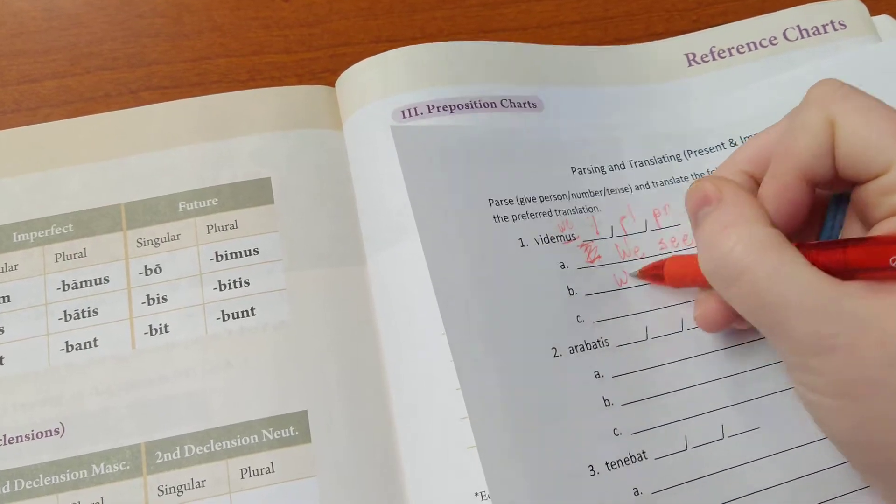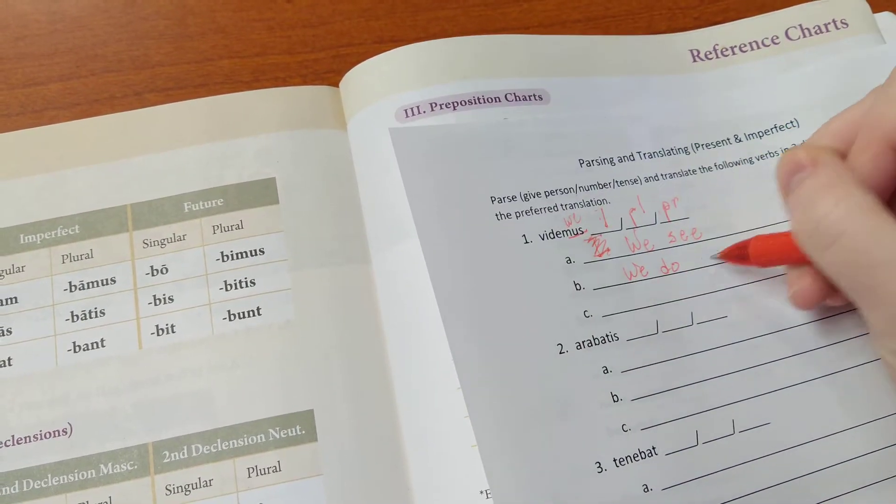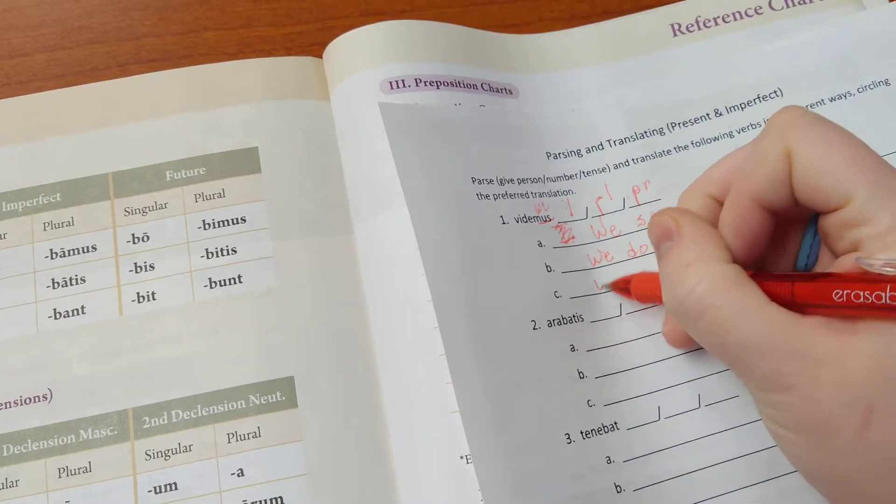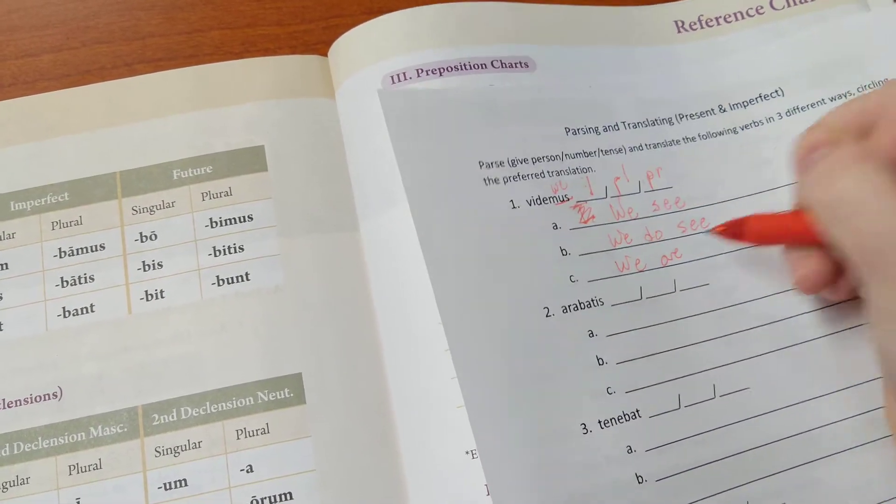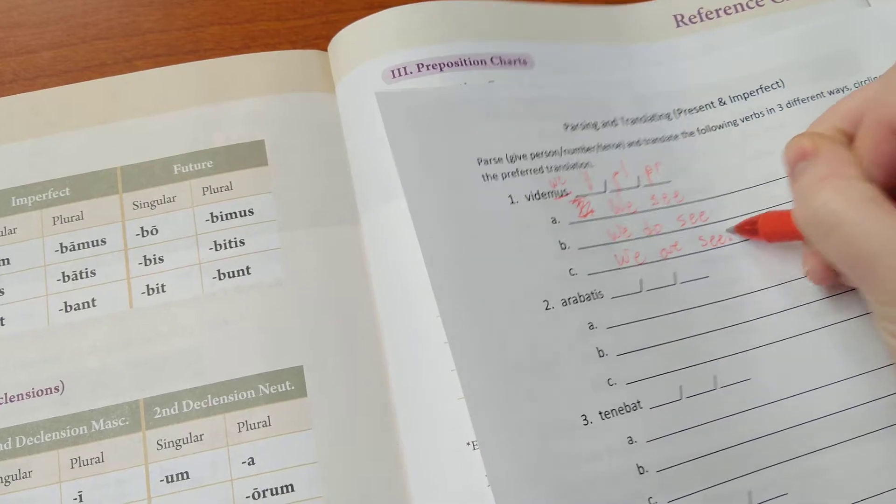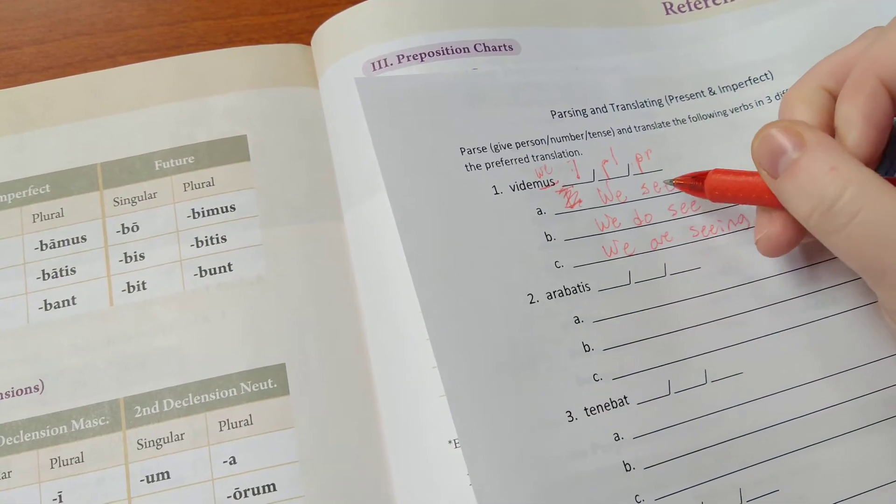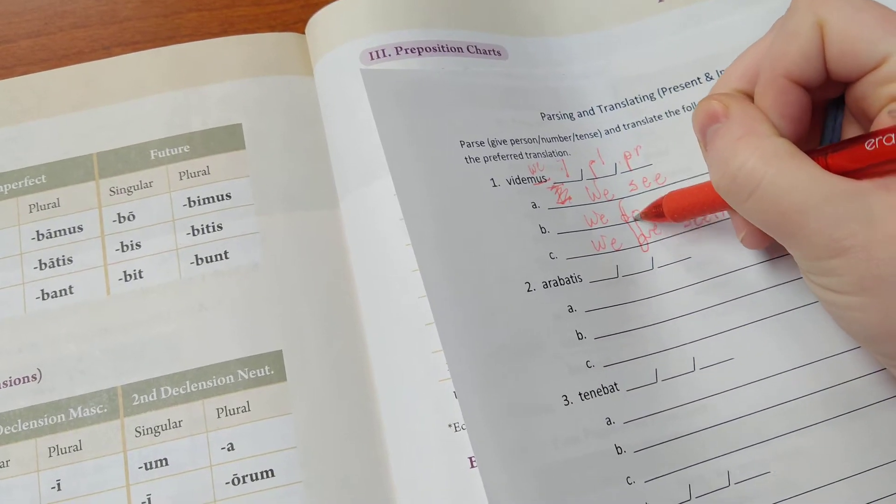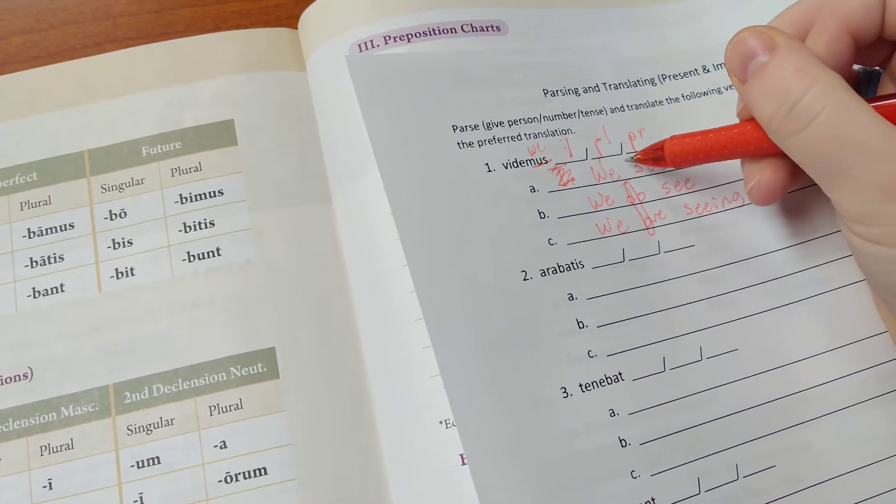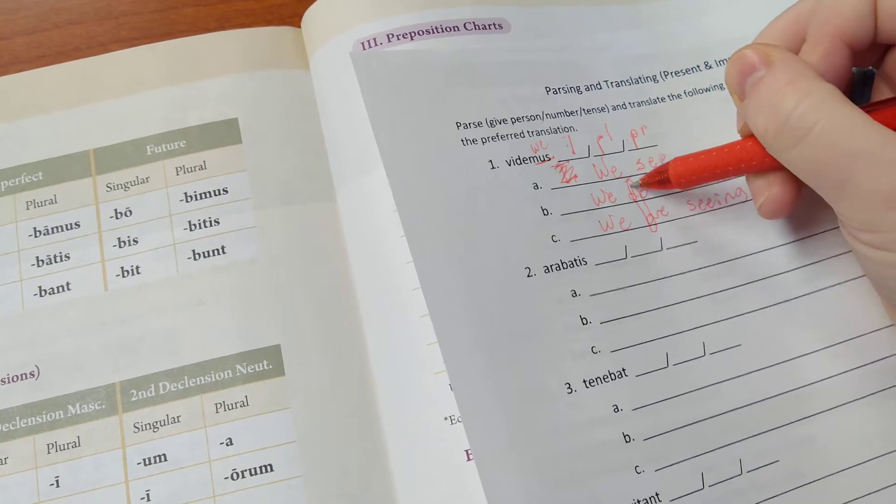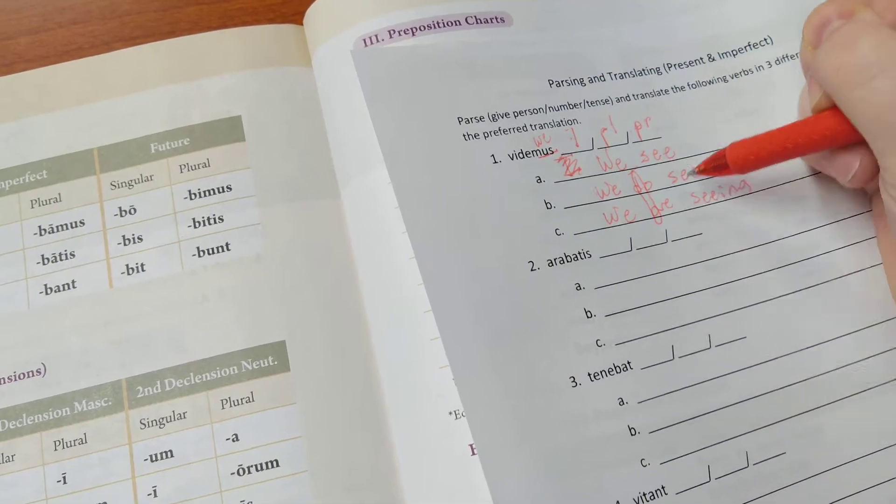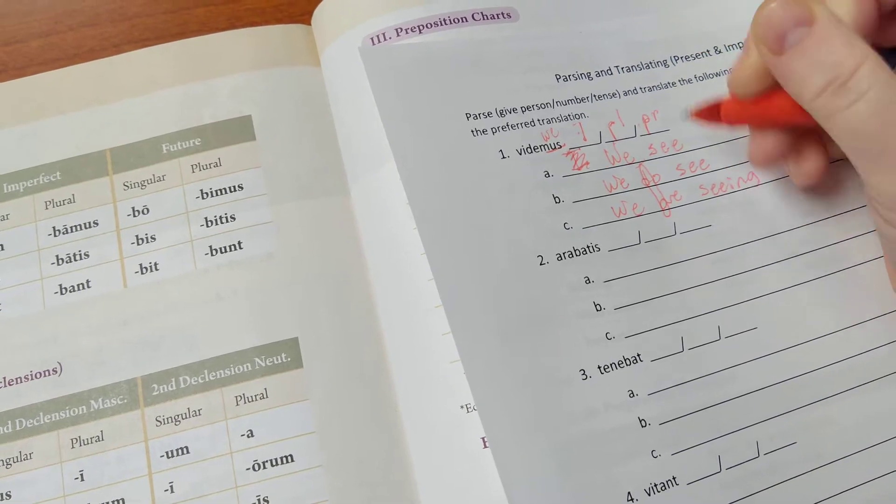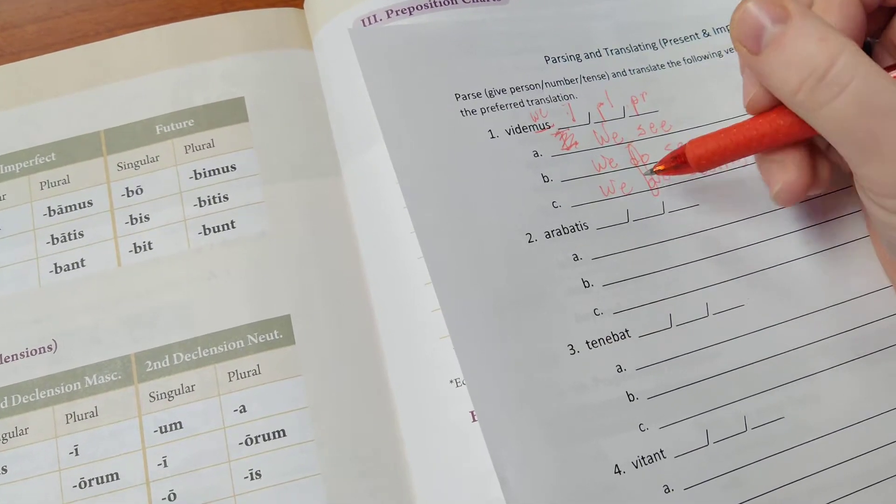Second way would be we do see. And the third way would be we are seeing. So a very bad mnemonic is just DA, because this one we don't have any helping verb, and then the next one we have do, and then whatever the verb is, and then this one is are or am or is.